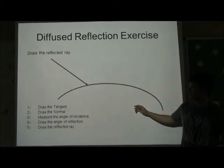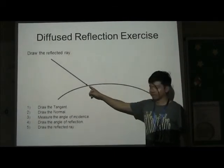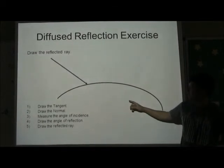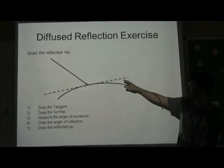We need to add one more additional step, that is to draw the tangent at the point of contact. Tangent is a line that only touches the curve surface at one point, as shown by the red line here.